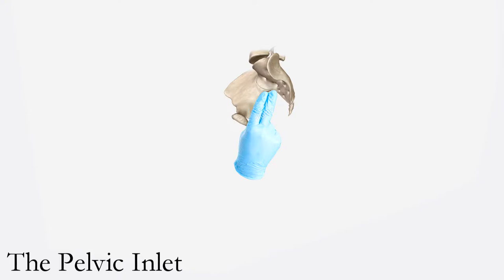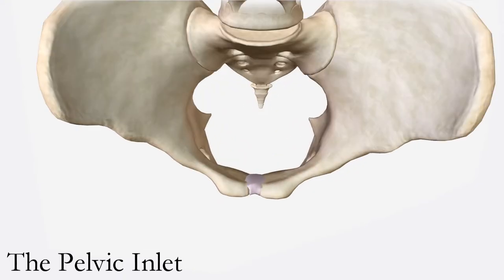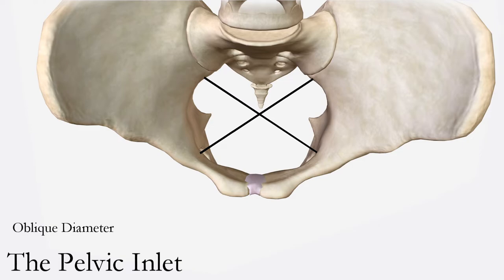The transverse diameter is constructed at right angles to the obstetrical conjugate, representing the greatest distance between the linea terminalis on either side. It usually intersects the obstetrical conjugate approximately 5 cm in front of the promontory and normally measures up to 13 cm, but cannot be measured upon examination. The oblique diameters extend from one sacroiliac synchondrosis to the contralateral iliopubic eminence and measure up to less than 13 cm.